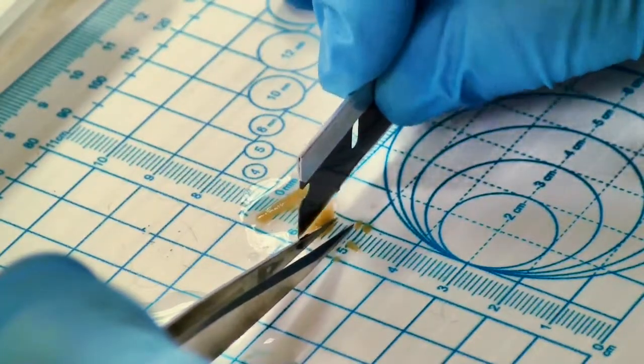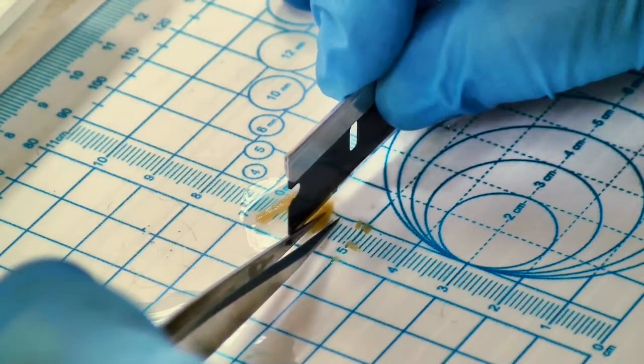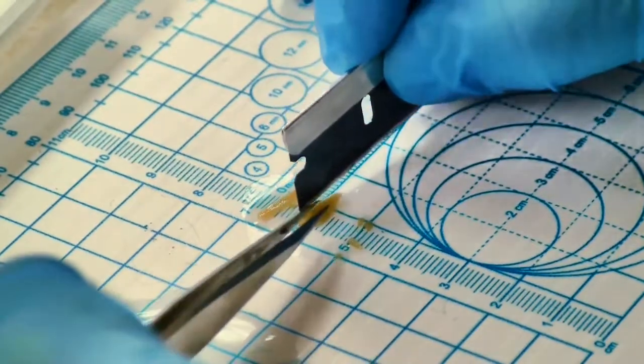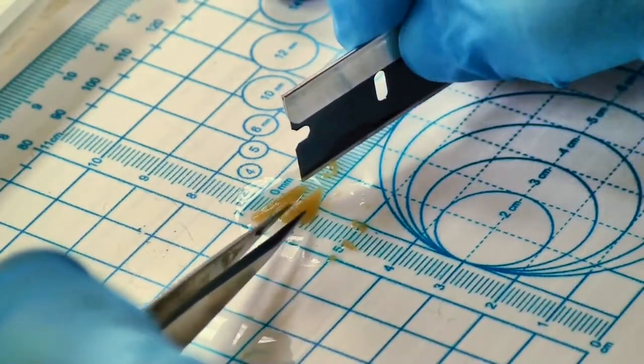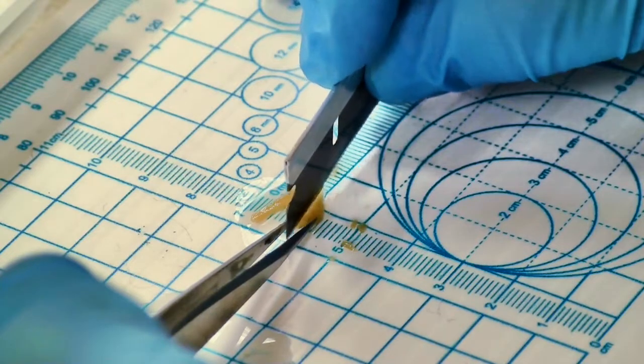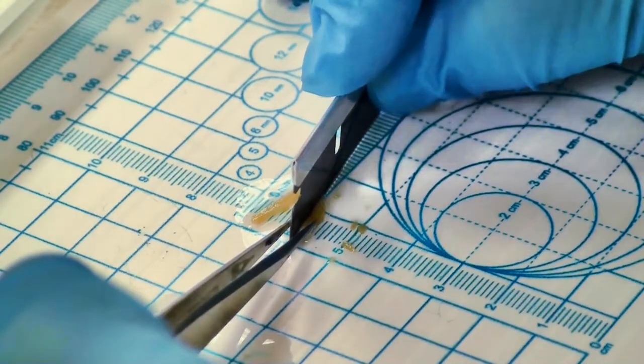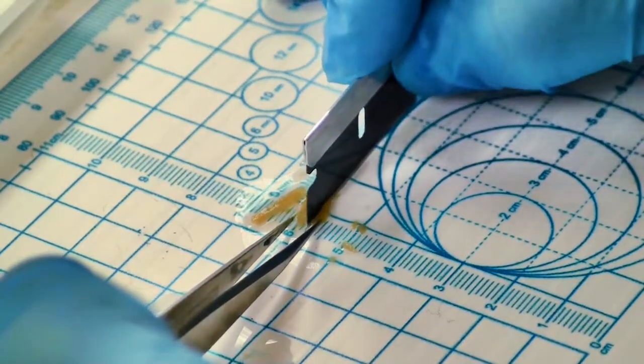And if it happens to move, don't worry about it. Taking a little extra time right here ensures that the samples are of the proper dimensions, so we don't have to worry about areas of the tissue that don't get fixed or infiltrated with resin. And one more little cut there.